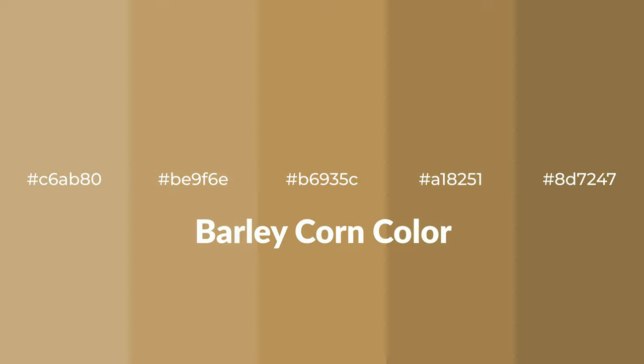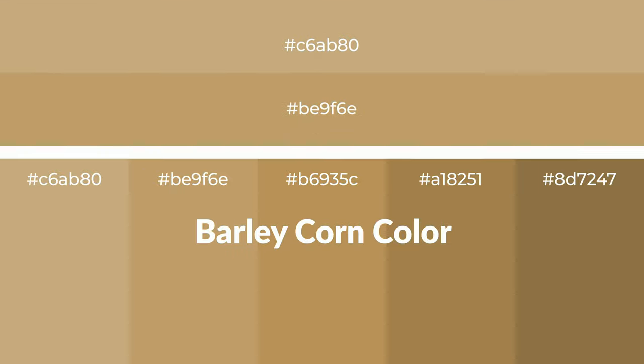Warm shades of barley corn color with yellow hue. To generate tints of a color, we add white to the color — tints create light and exquisite emotions. To generate shades of a color, we add black to the color, and it is used in patterns, 3D effects, and layers. Shades create depth and drama.